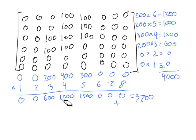And I see I made a mistake here. This is not 1,200. This is 400 times 4 is actually 1,600. There we go. And that gives me my 3,700.